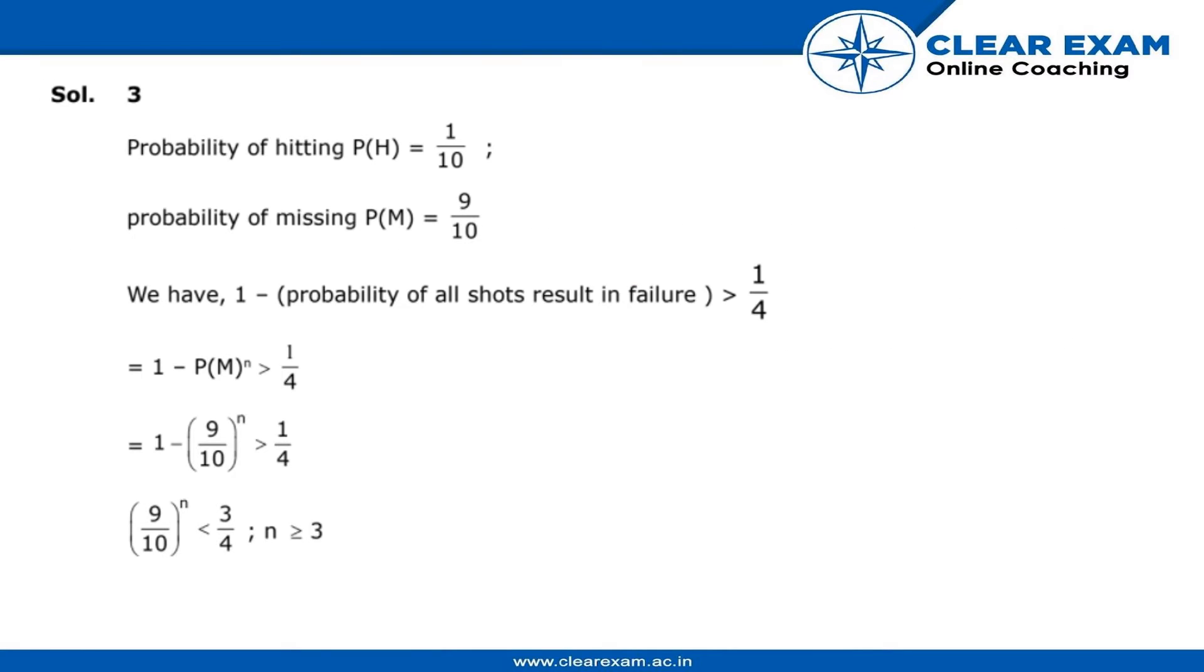In the solution, it is written that the probability of hitting is 1 by 10. So, the probability of missing is 9 by 10 because the probability of missing equals 1 minus probability of hitting, that is 1 by 10.